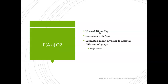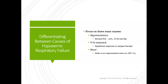Typically, the AA gradient should be around 10. Also know that this number increases with age. Your book talks about estimating the mean alveolar-to-arterial difference by age: take the patient's age, divide by 4, and add 4. For example, if I'm 40 years old — 40 divided by 4 is 10, plus 4 equals 14. So my AA gradient, instead of normally being 10, would be 14.